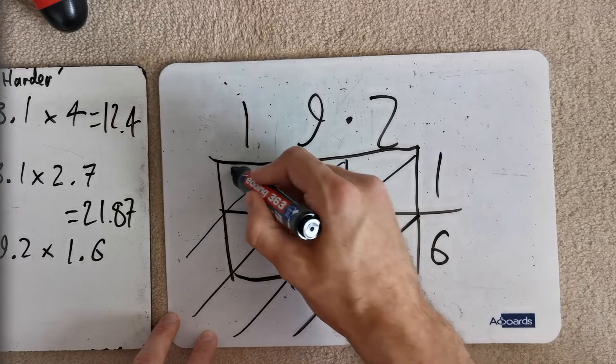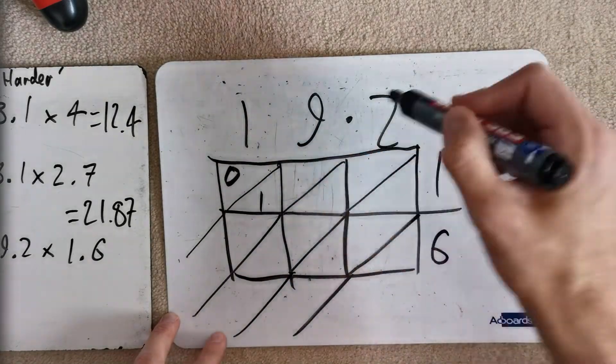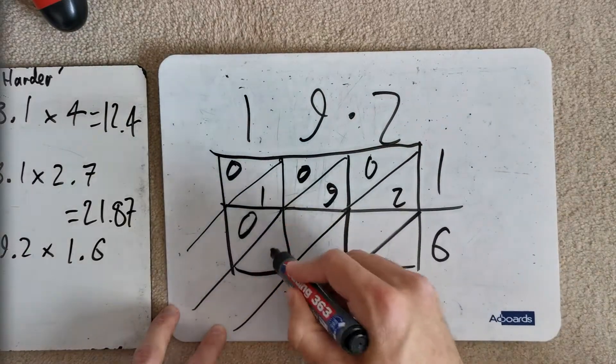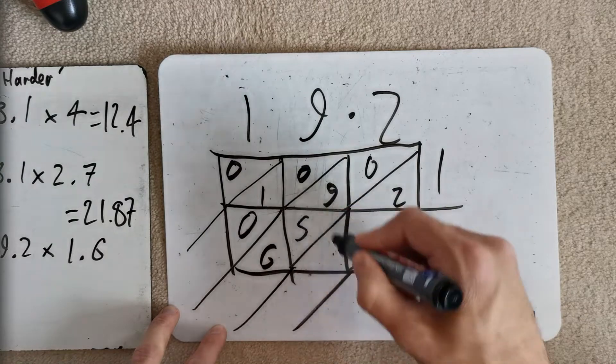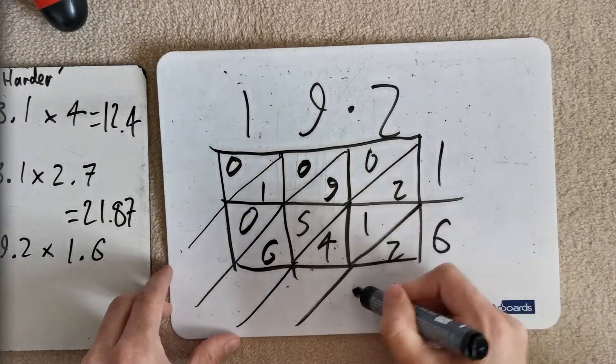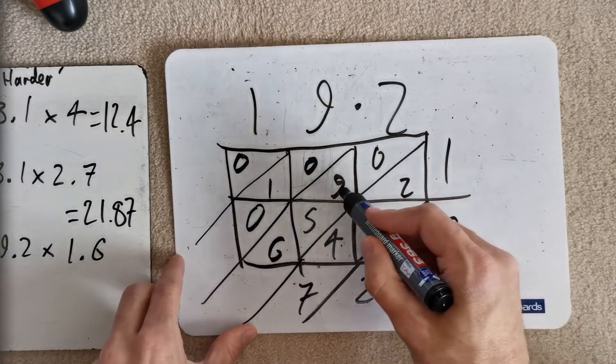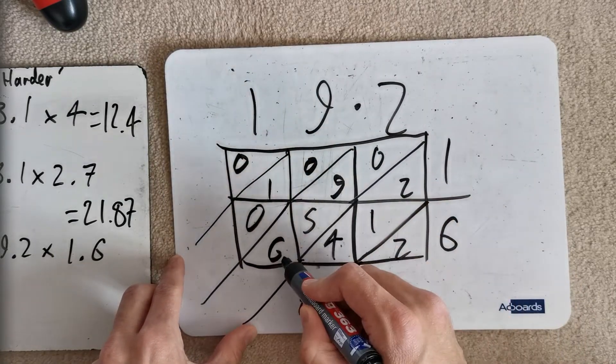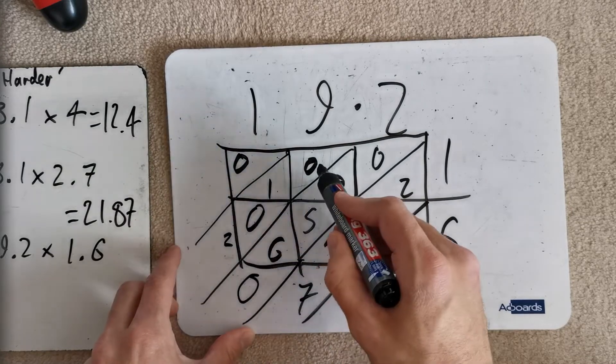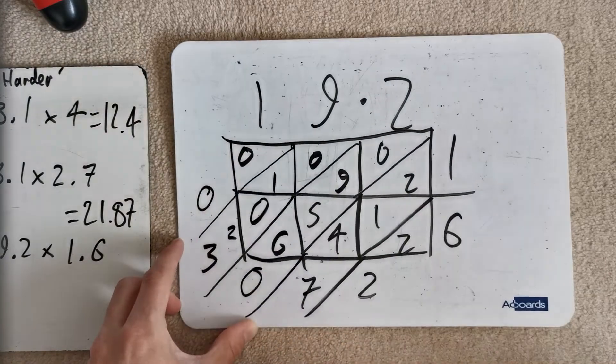1 times 1 is 1. I nearly said 2 then. Don't judge me. 9 times 1. 2 times 1. There we go. 1 times 6. 9 times 6, 54. 2 times 6, 12. Add down the diagonals. 2. 2 and 1 and 4 is 7. 0 and 9 and 5. So, 14 and 16. That's 20. Carry the 2 over. 20. 0 and 1 and 0 and 2 is 3. And then the 0 is there.